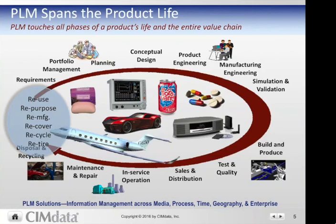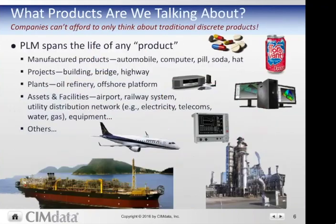PLM also covers sales and distribution, maintaining and in-service operations of plant facilities or products in the field, and ultimately end-of-life or the next life — into the re-axes of the circular economy such as reuse, repurpose, remanufacturing, recover, recycle, and retire. Products take all shapes and sizes and forms — from manufactured products to plants and assets and facilities, even into areas of finance and insurance that have products as well. They're all about a configuration of information that defines the virtual product and the information that defines the virtual processes.